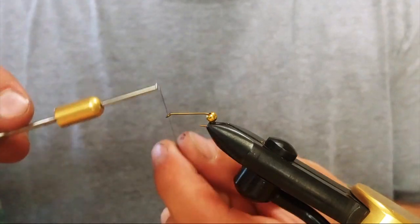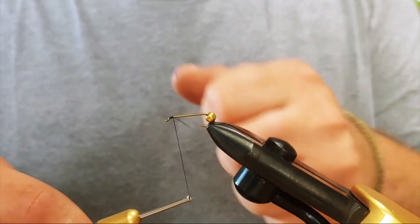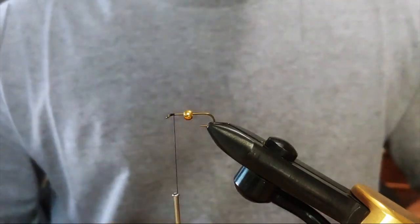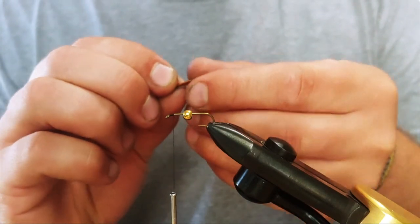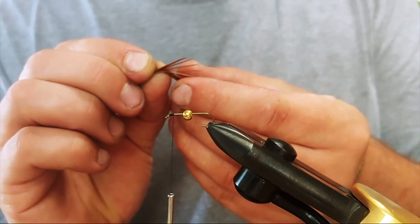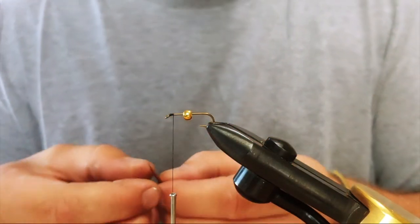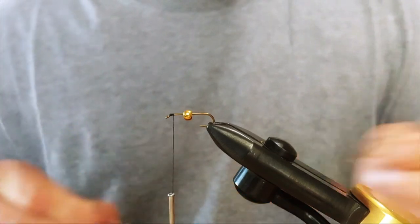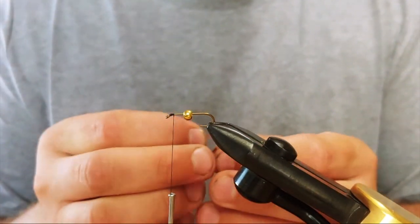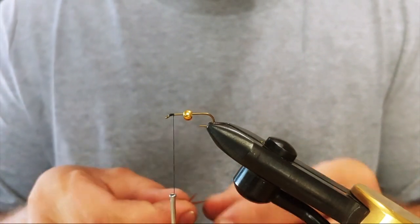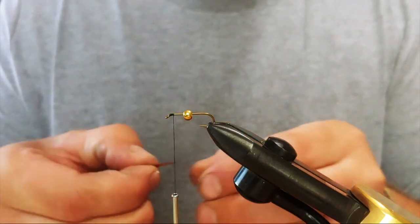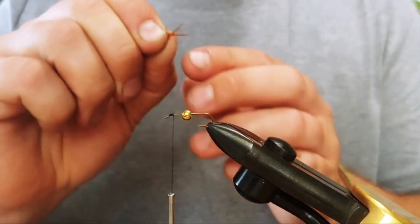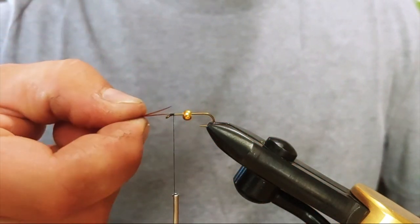So I'm going to start here with the horns using rusty brown goose biots. I'm going to peel four of these off. I'm going to take the two and set them up opposite to one another, so one's cupped up, one's cupped down. Just really helps I feel give it a better look.